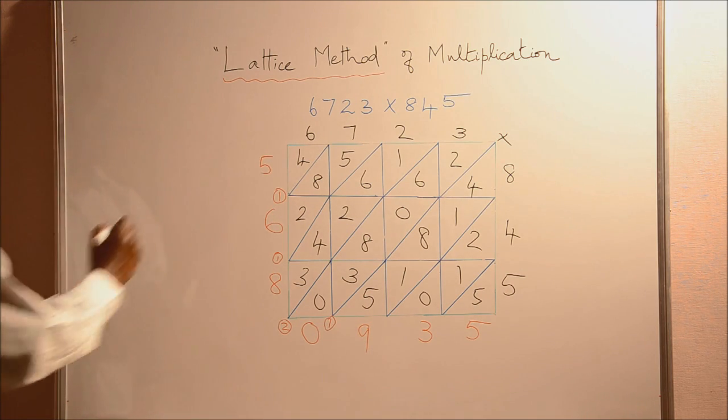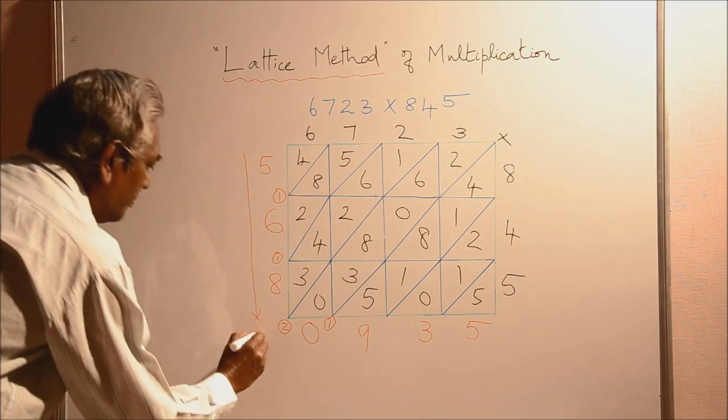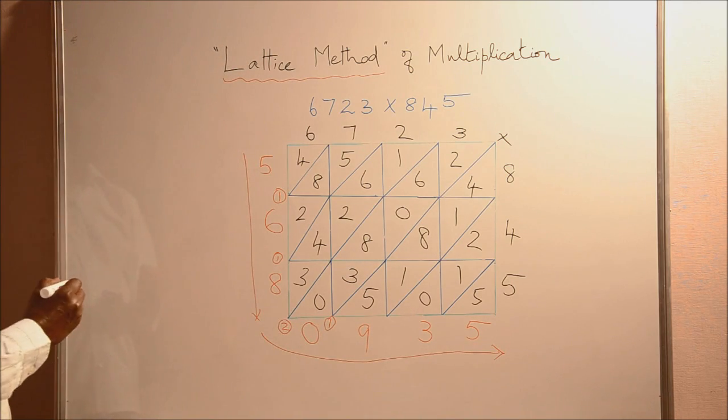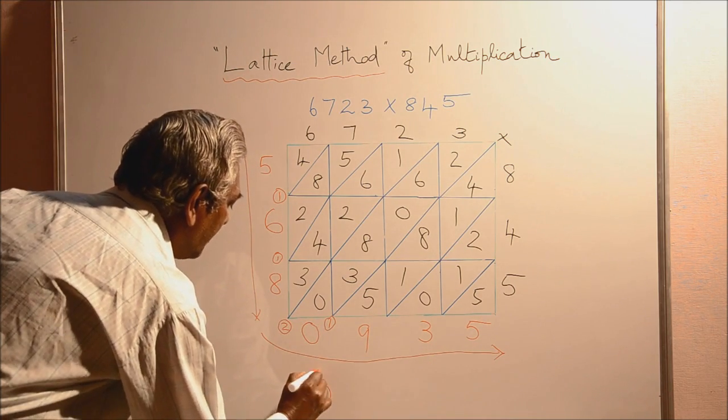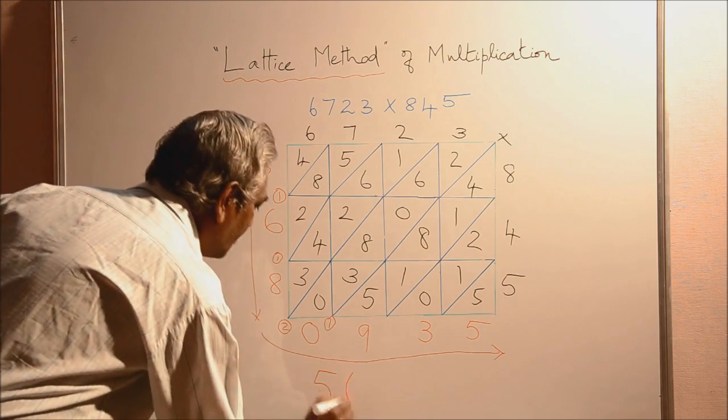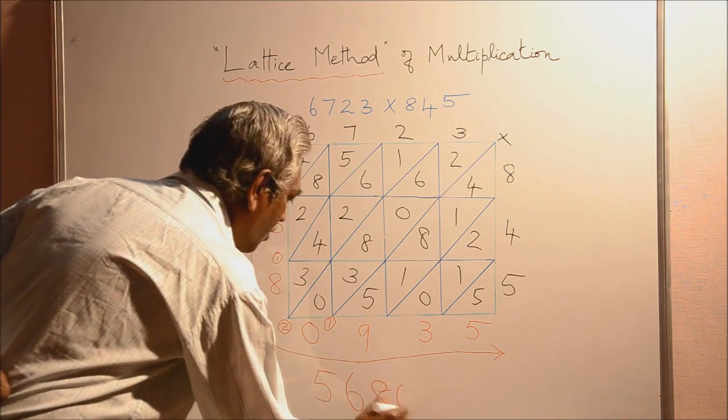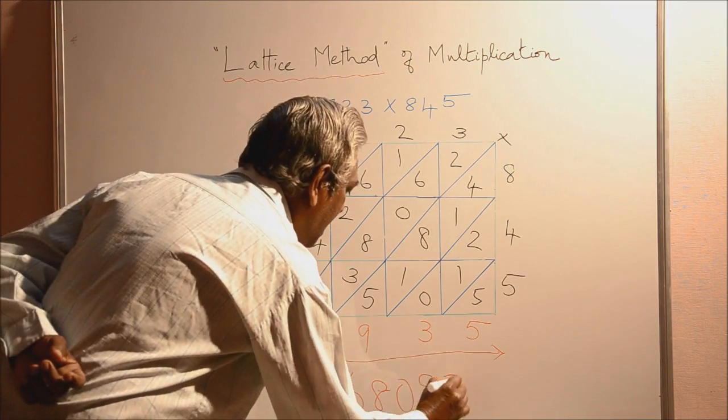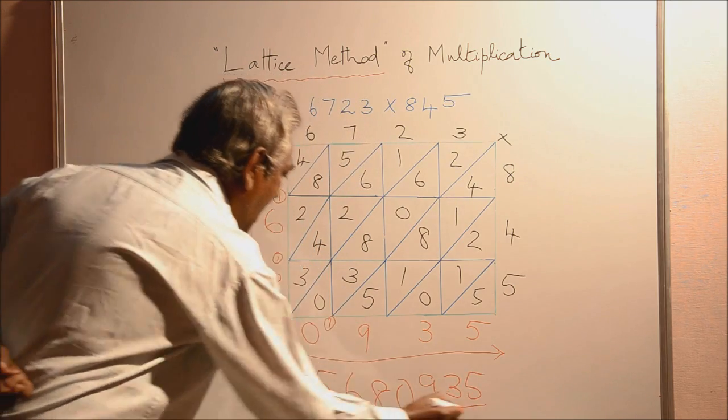To write the answer, we come from here, top to bottom. Then from left to right, we move. So the answer will be simply 5, 6, 8, then 0, then 9, 3, 5. So this is the answer.